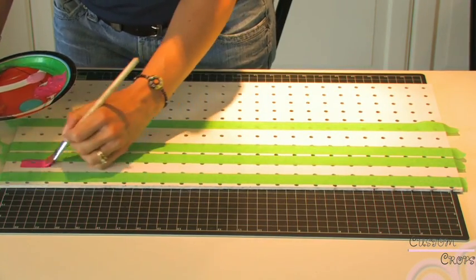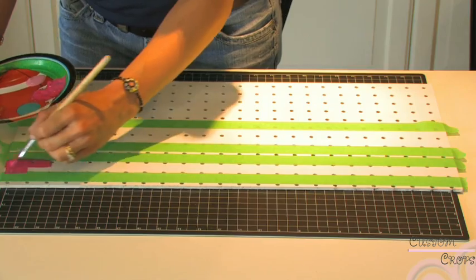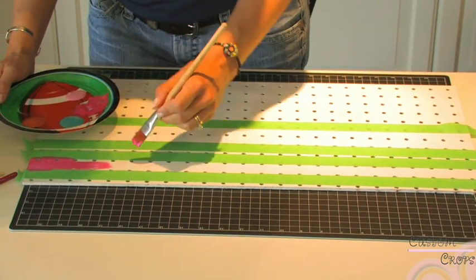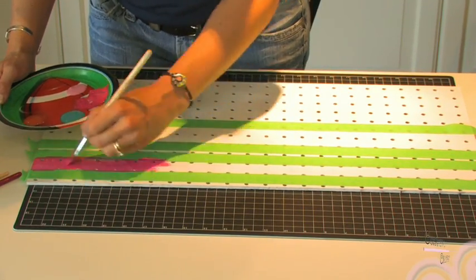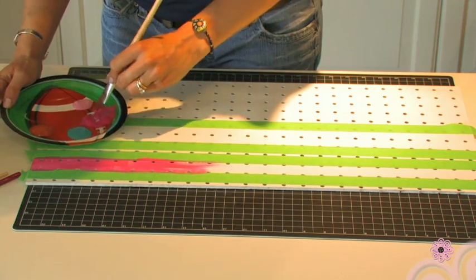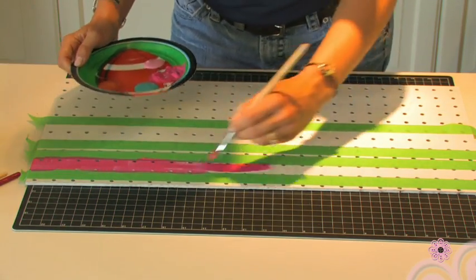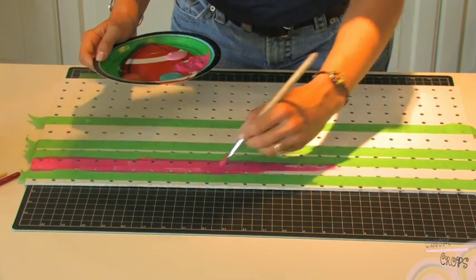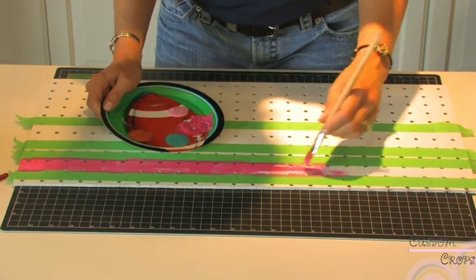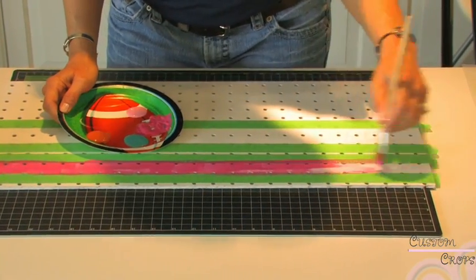I'm just gonna start brushing my color on. Like I said, it doesn't have to be perfect. Actually, it's kind of nice if it's a little irregular and some of the white shows through.